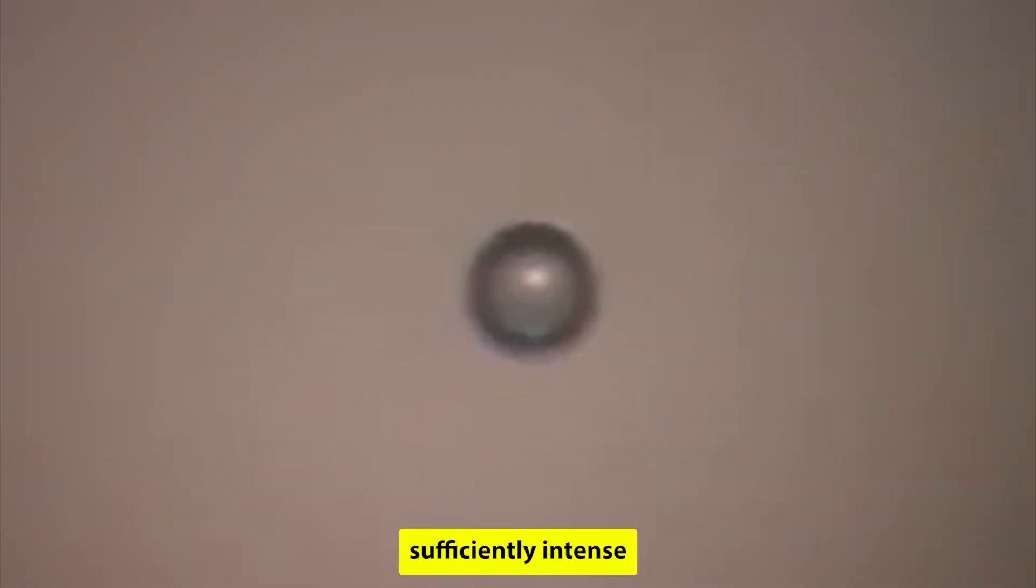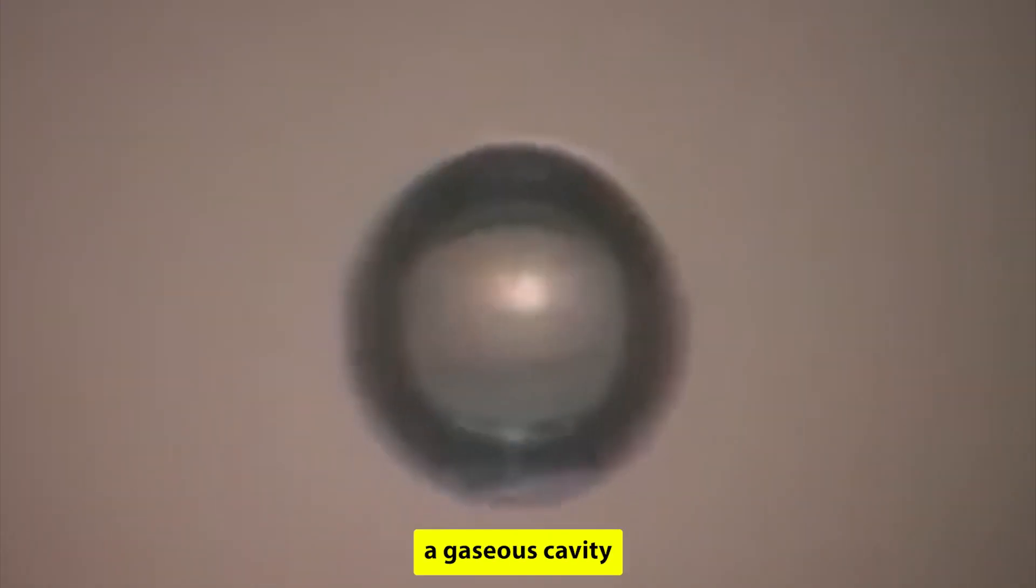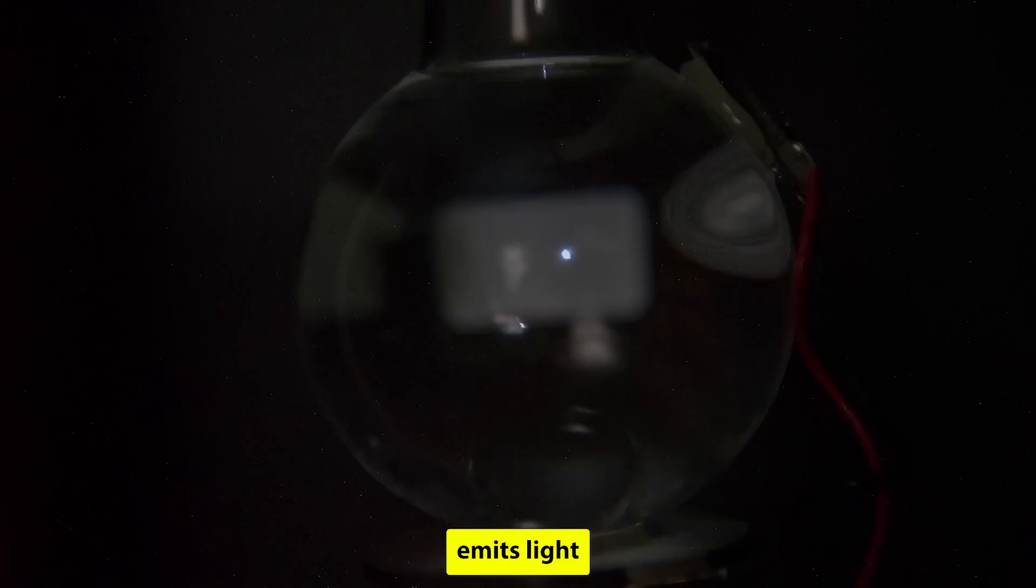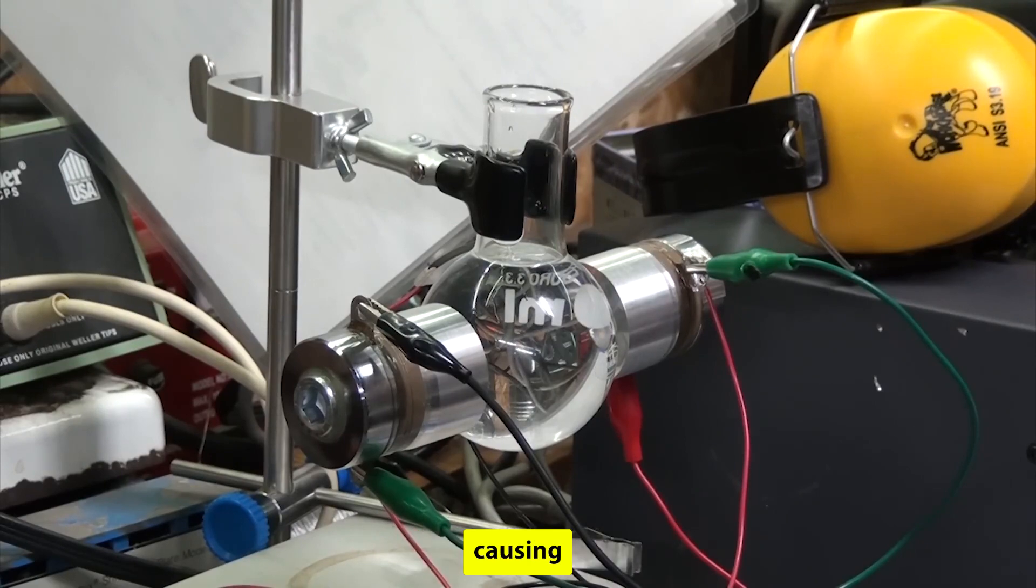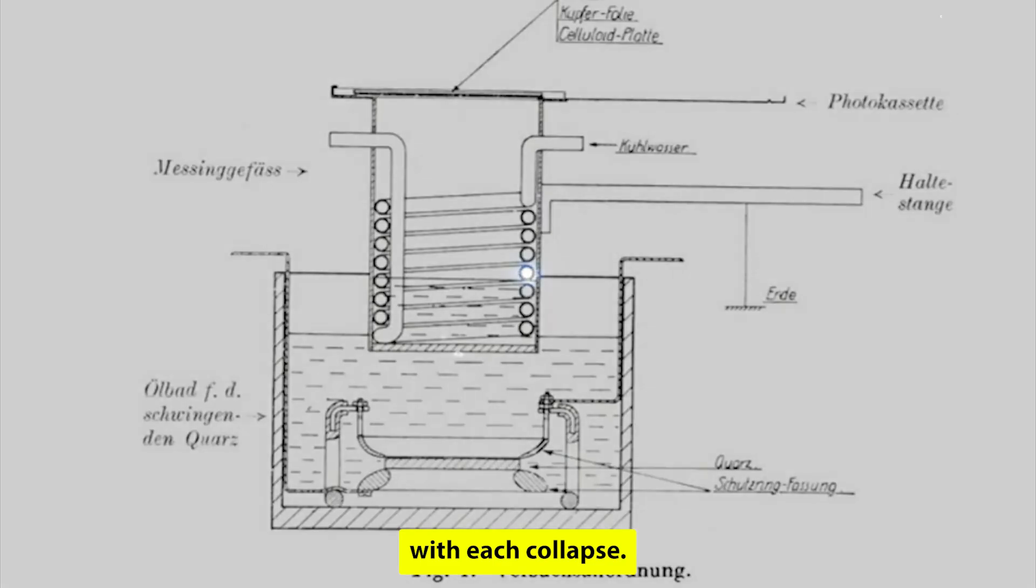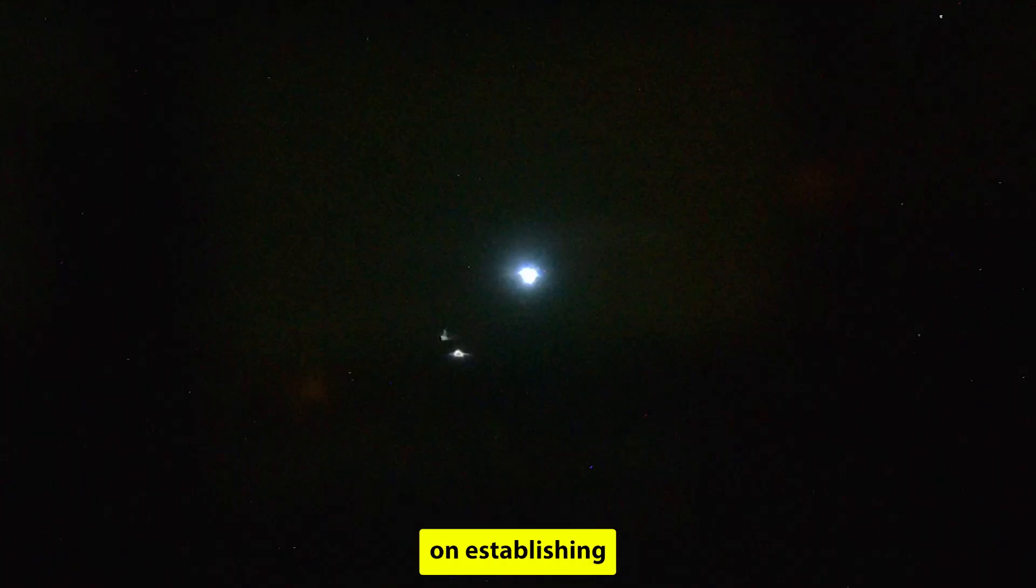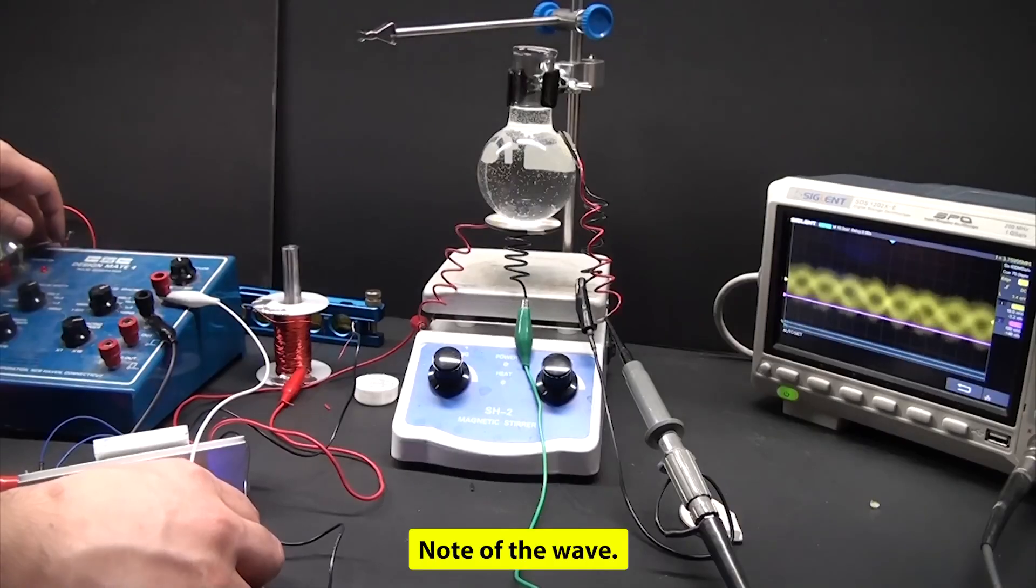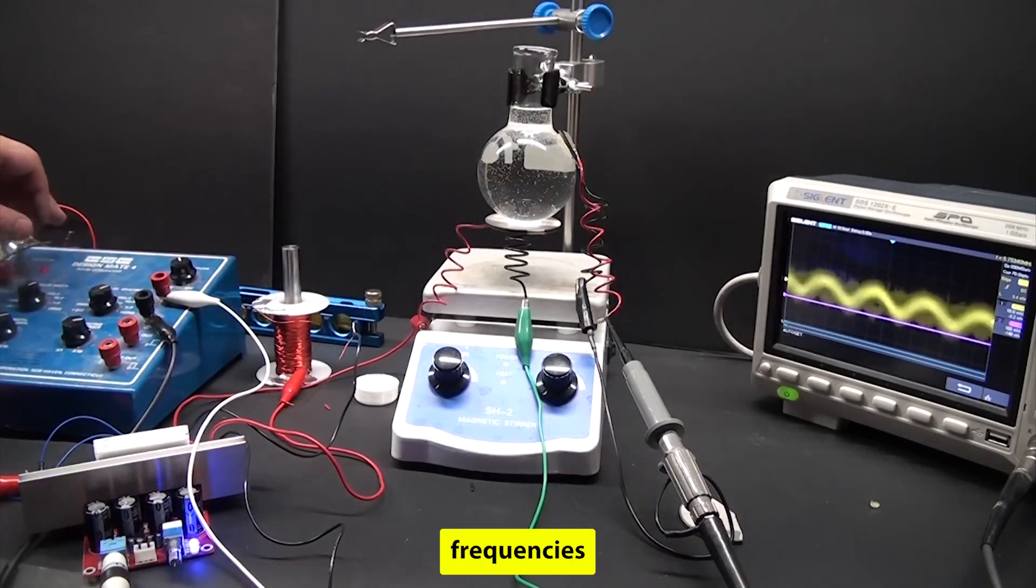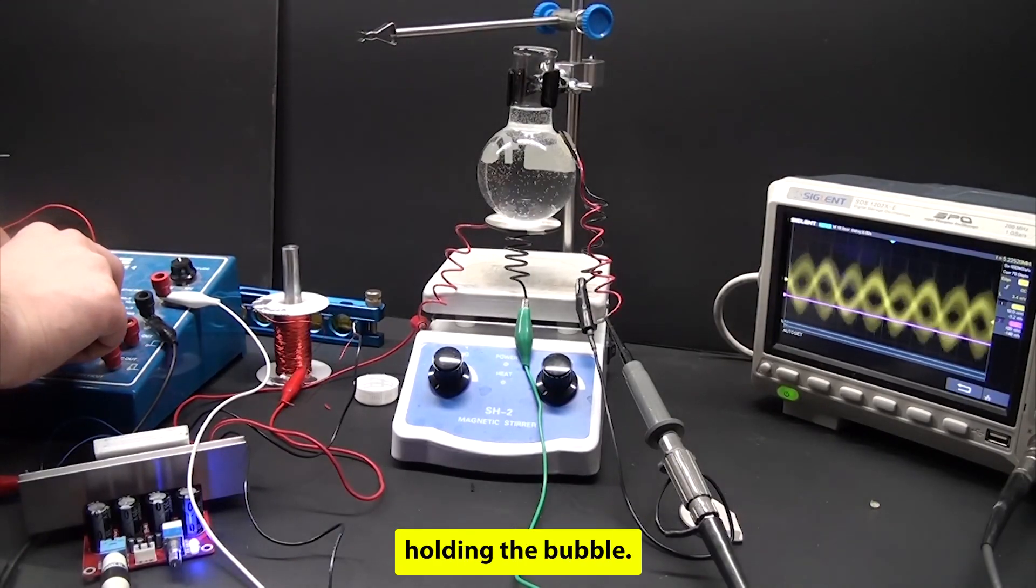Sonoluminescence occurs when a sufficiently intense sound wave induces a gaseous cavity in liquid to rapidly collapse. This cavity, formed either from a pre-existing bubble or through cavitation, emits light as it collapses. In controlled laboratory conditions, sonoluminescence can be stabilized, causing a single bubble to cyclically expand and collapse, emitting light with each collapse. This phenomenon relies on establishing a standing acoustic wave in the liquid, positioning the bubble at a pressure antinode of the wave. The resonance frequencies are determined by the shape and size of the container holding the bubble.